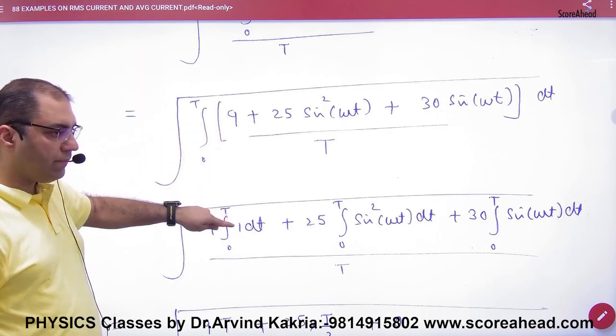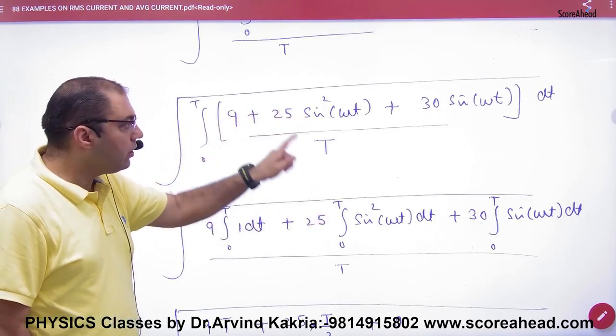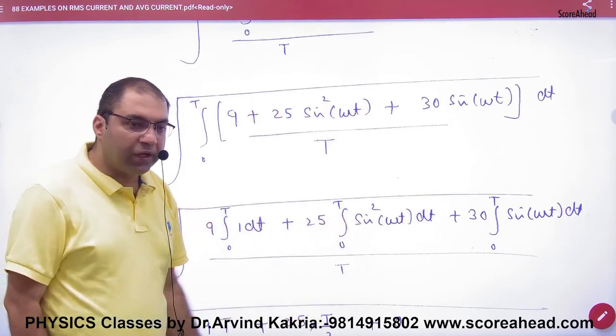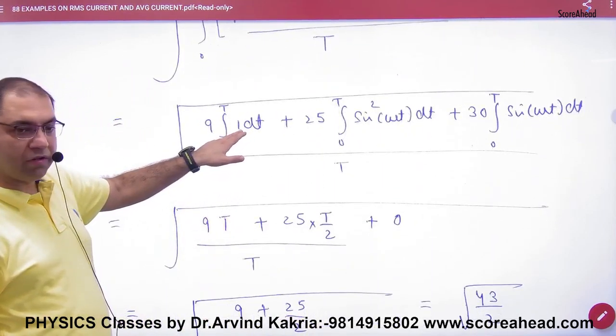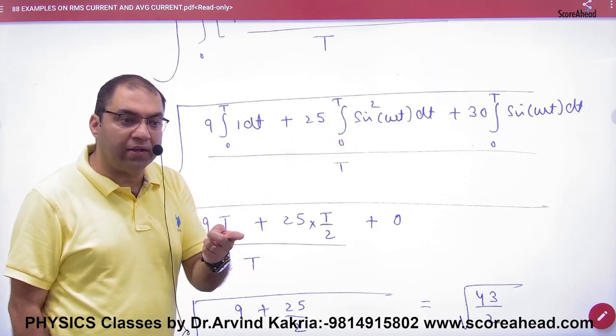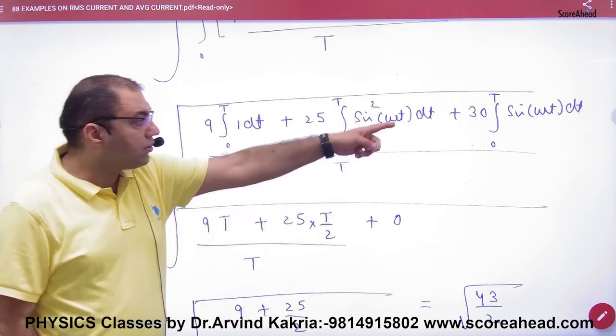So integration of first term plus integration of second term plus integration of third term and constant goes out. So integration of 1dt, what will be t? Sin square of integration. What answer is t by 2.